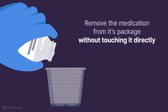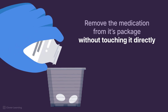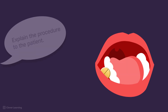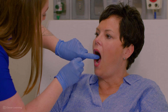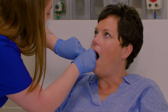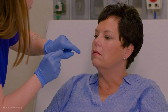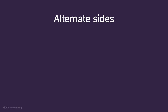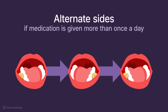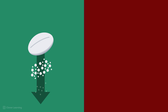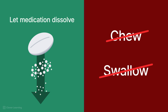Wearing gloves, remove the medication from its package without touching it directly. Explain the procedure to the patient, including how the medication should be placed in the mouth. Ask the patient to open their mouth. Place the medication in the buccal pouch, the area between the gum and cheek, alternating sides if the medication is given more than once a day to prevent mucosal irritation. Advise the patient to keep the medication in place in the buccal pouch until it dissolves completely, without chewing or swallowing it immediately.